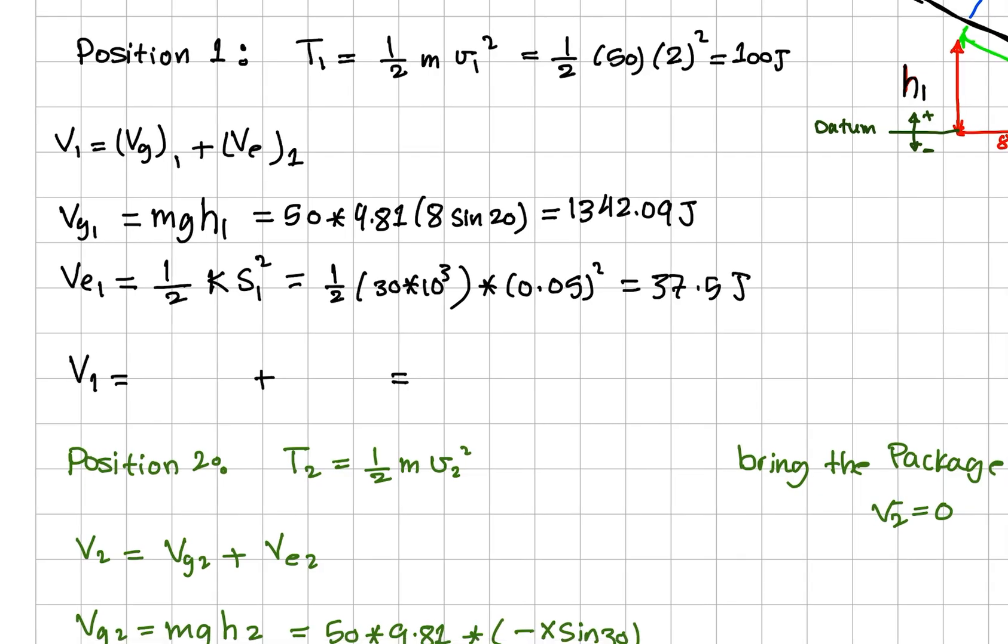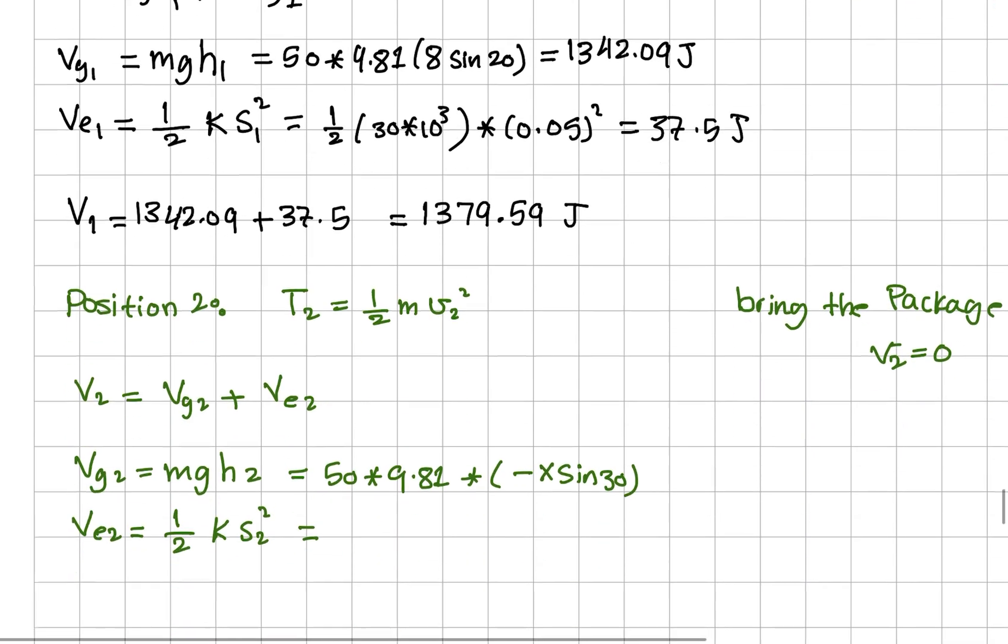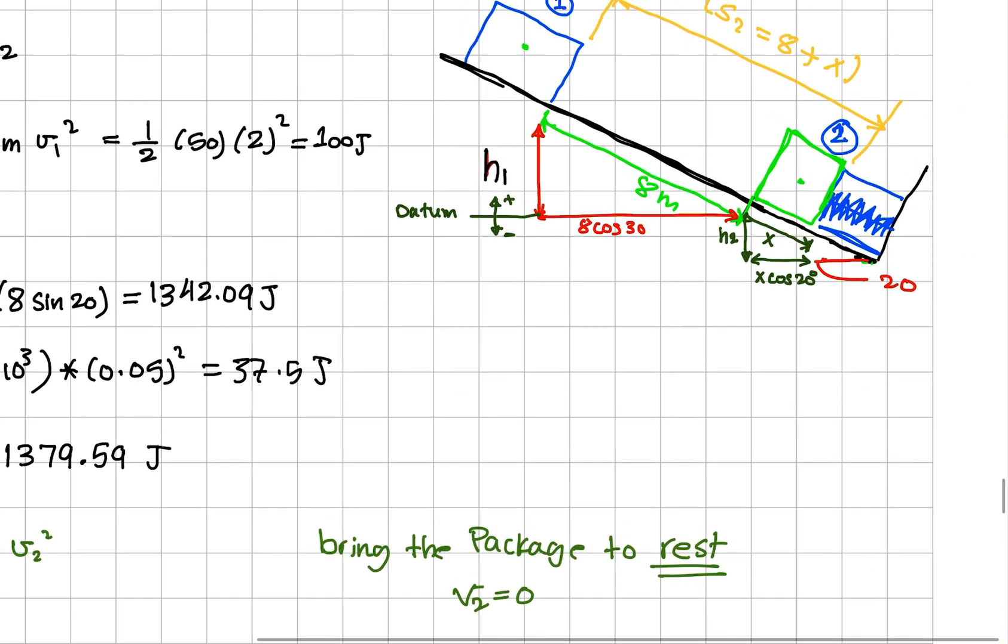This will give us 37.5 joules, and the potential energy will equal the summation of these two components, and that equals 1379.59 joules.